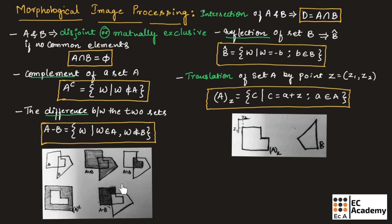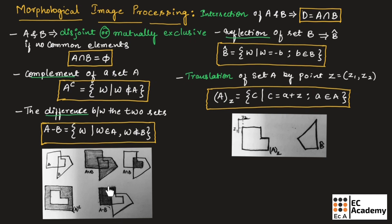This figure shows examples for the above set theory operations, with results indicated in gray. A ∪ B and A ∩ B are shown, where gray represents the intersection region. The complement of A and the difference A minus B are also shown — in A minus B, only the region of A that does not overlap with B is shown in gray.